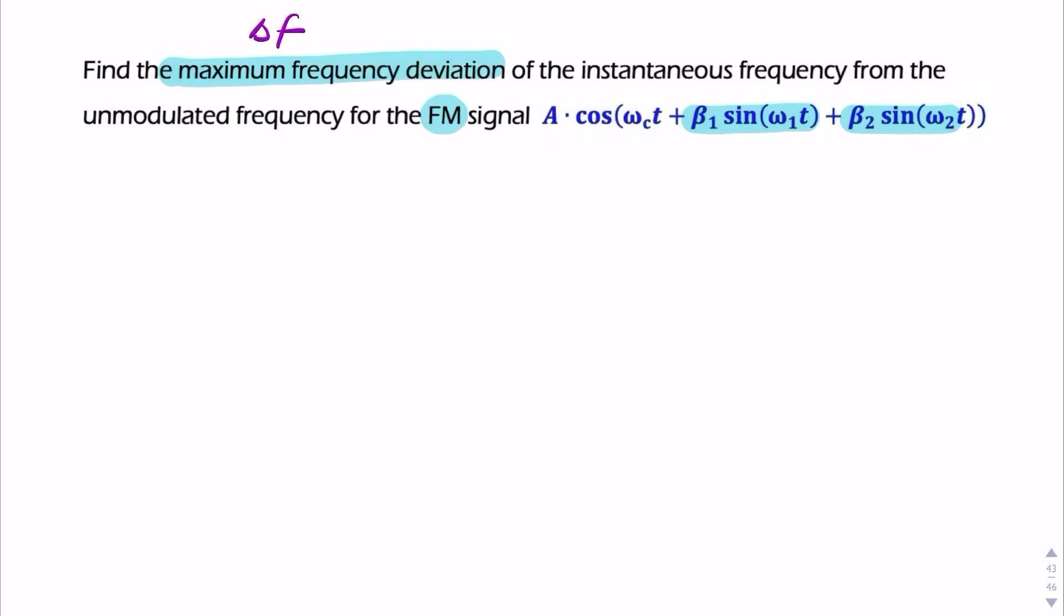So find delta f. Presumably, they want this in terms of beta 1 and beta 2. So, let's remind ourselves, what is delta f? Delta f is simply the maximum of the difference between the instantaneous frequency and the carrier frequency. The carrier frequency being that there. So, that's the carrier frequency.